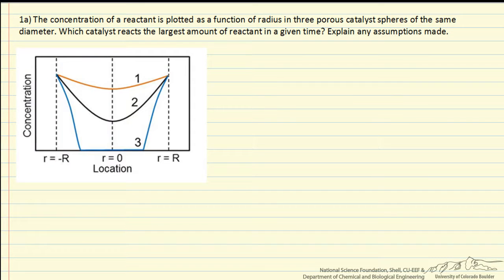In this problem, we're given the concentration of a reactant inside of a porous catalyst sphere for three different catalysts — same diameter, but the concentration profiles are significantly different. The question is which one of these catalysts is going to react the largest amount of reactant in a given time. It's the same reaction, and we're also required to indicate any assumptions.